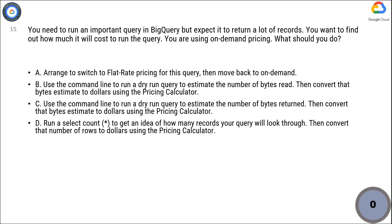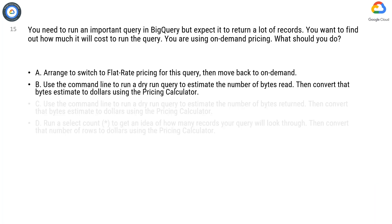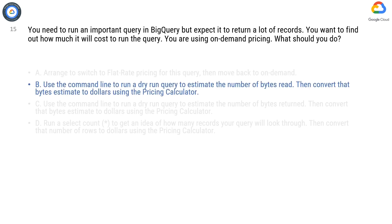Option A, Option C, and Option D are not correct. Under on-demand pricing, BigQuery charges for queries by using one metric: the number of bytes processed, also referred to as bytes read.